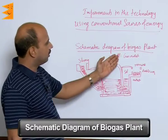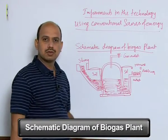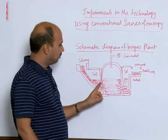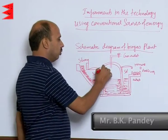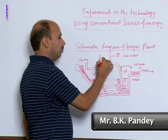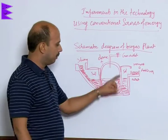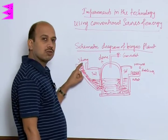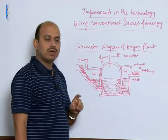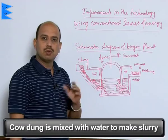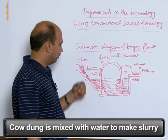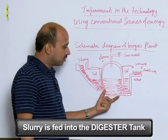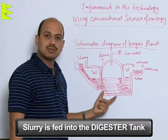This is a schematic diagram of a biogas plant. Here there is a dome type structure made of bricks. This portion is for slurry — cow dung is mixed with water to make slurry. The slurry is fed into this dome type structure, which is known as the digester tank.